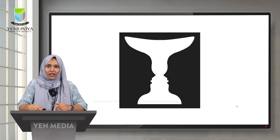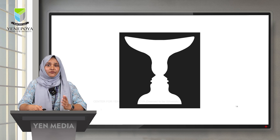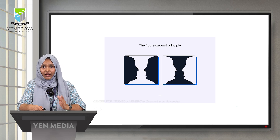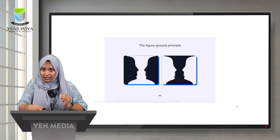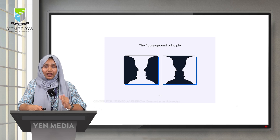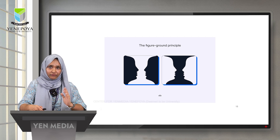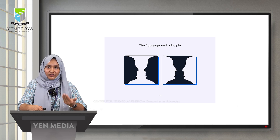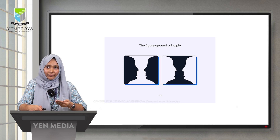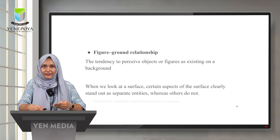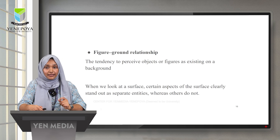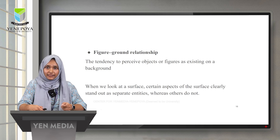As you can see in this figure, some might perceive two faces while others perceive a goblet. This phenomenon is called the figure-ground principle. When there are two contrasting colors, our brain tends to keep one as the background and the other as the figure. In the first photo, most of us perceive the black area as two faces; in the second, as a goblet. This is the figure-ground relationship: the tendency to perceive objects as existing on a background, where certain aspects stand out as separate entities.